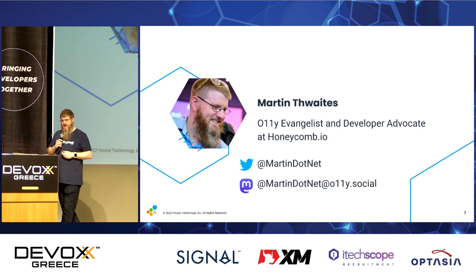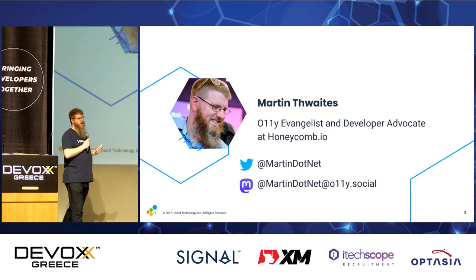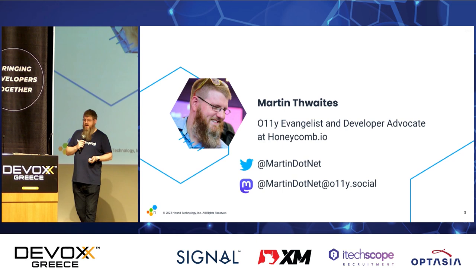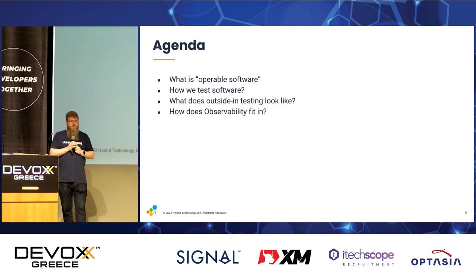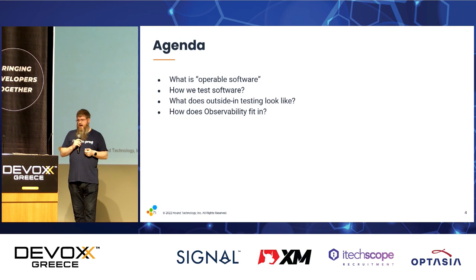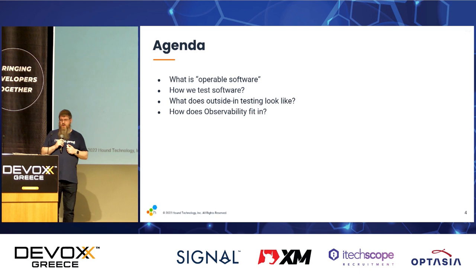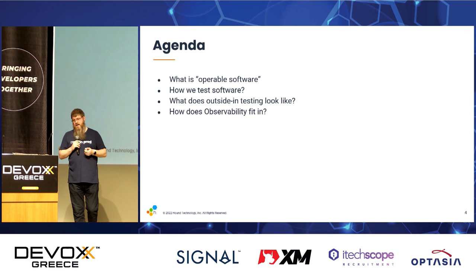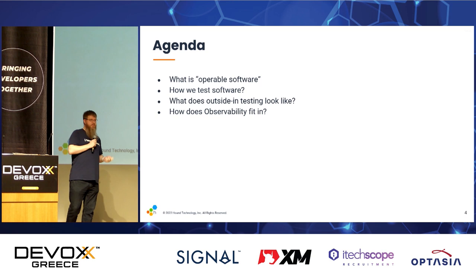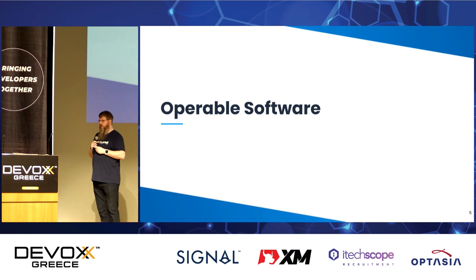Who am I? I am Martin Thwaites. First and foremost, I am an observability evangelist — somebody who has been going around talking about how we understand our production systems for many years. I'm also a developer advocate at Honeycomb. You can find me on Twitter at martin.net or on Mastodon at martin.net at ollie.social. Today we're going to cover what is operable software, how we test software as engineers, outside-in testing, and how observability fits into building software for production.